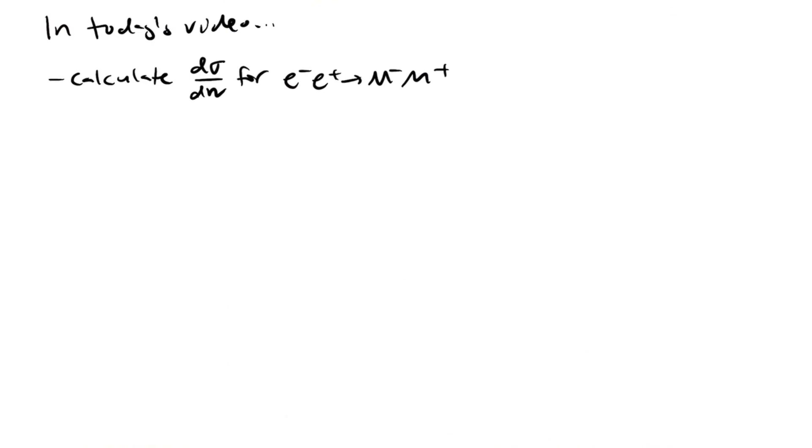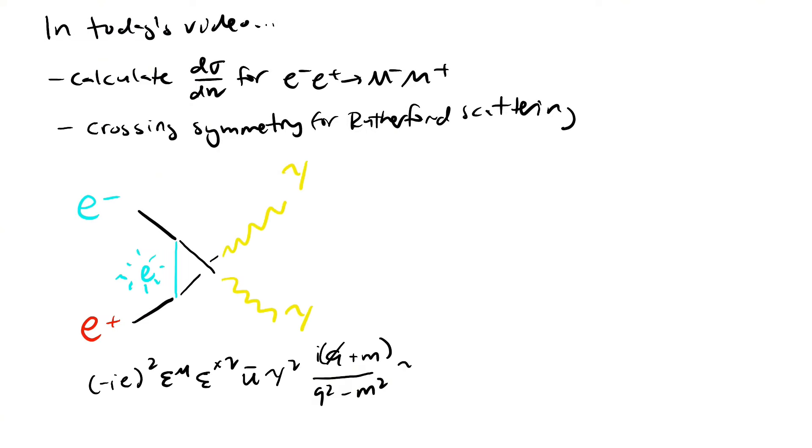In today's video, you learned how to calculate the cross-section for muon-proton scattering, and how to use Mandelstam variables to calculate Rutherford scattering. In the next video, we'll look at our final QED scattering process, electron-positron annihilation. See you guys then!